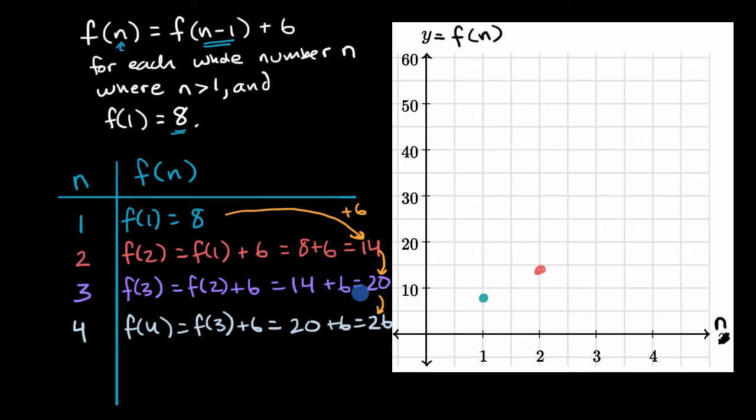When n is three, we get to 20. So that is there. And then last but not least, when n is four, we get to 26. 26 gets us right about there.